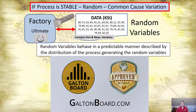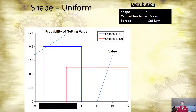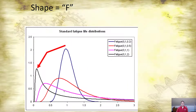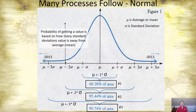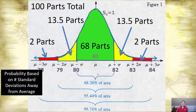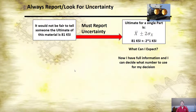There are different patterns that random variables follow: a uniform pattern, an F distribution, and the normal distribution, which lots of processes follow. What's nice about the normal distribution is the probability of something happening is based upon the number of standard deviations you are away from the average. That makes it easy to know what we can expect from a random variable following the normal distribution.